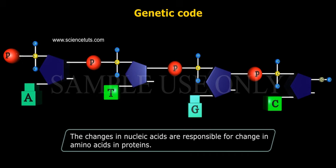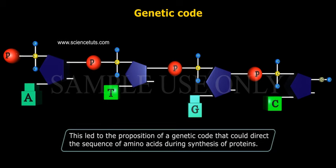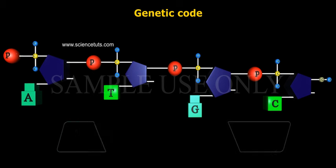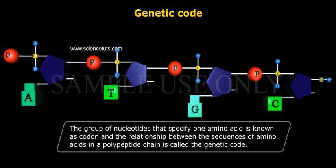The changes in nucleic acids are responsible for change in amino acids and proteins. This led to the proposition of a genetic code that could direct the sequence of amino acids during synthesis of proteins. The group of nucleotides that specify one amino acid is known as a codon, and the relationship between the sequences of amino acids in a polypeptide chain is called the genetic code.